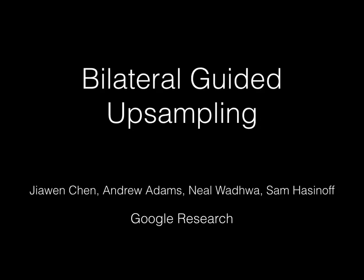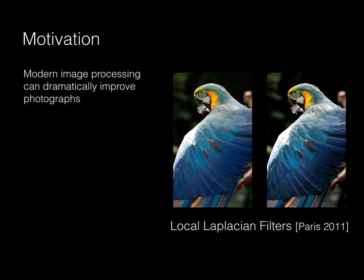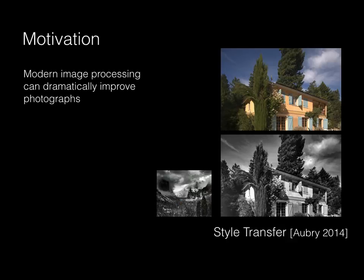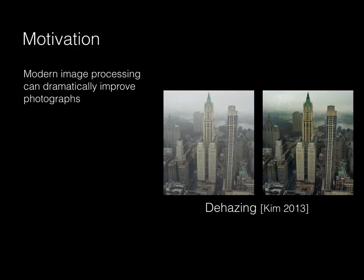Our focus is on algorithms where the output is an improved version of the input. For example, local Laplacian filters, which adaptively tone map an image to make this parrot really stand out. Or this technique that can make your photo mimic the style of a famous one by Ansel Adams. Or this method to automatically remove haze.